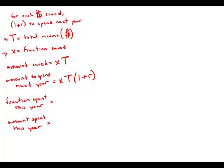If he saves x this year, then 1 minus x is how much he spends this year, and the amount he spends this year is 1 minus x times T. Now we're told that the amount that he will spend next year, x times T times 1 plus r, equals half the amount that he spends this year.